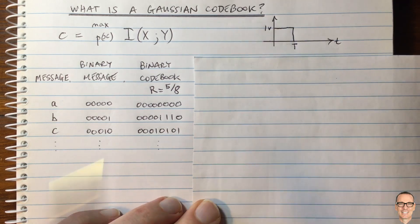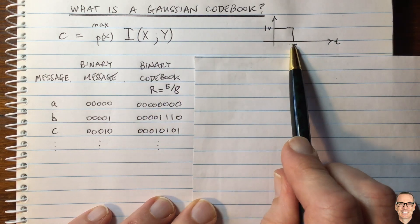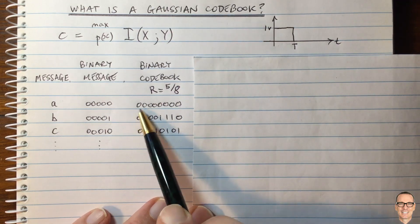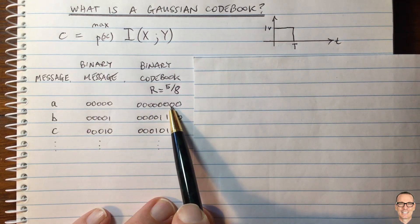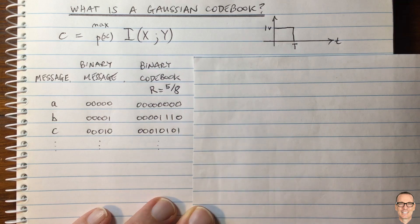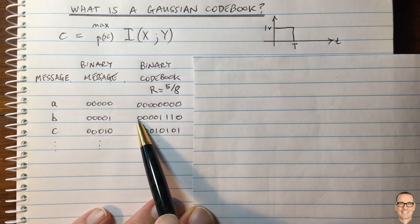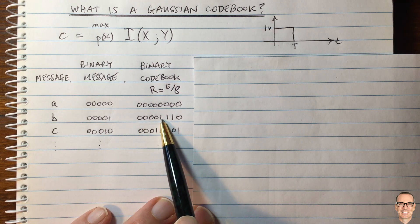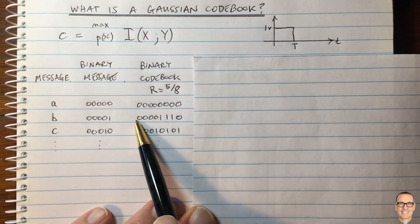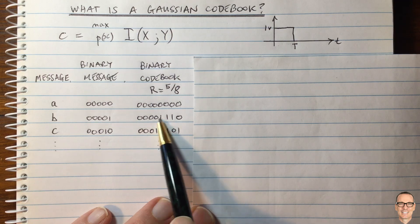Now we've got eight bits, so we spend longer periods of time. Each one is going to be sent with a waveform — either a one or zero. The way we generated this was by taking the original five and then adding three on the end in a clever way using what we call parity. For example, we add up all five bits in binary and then add a bit at the end that makes the total even. So if you've got an odd number, you add another one to make it even — that's parity over the whole sequence.